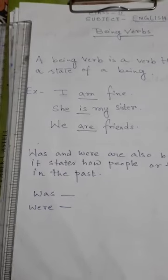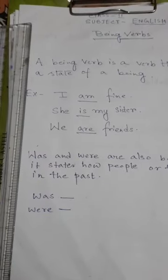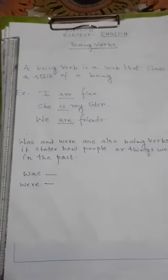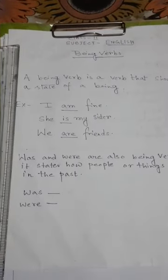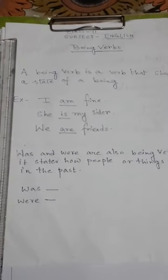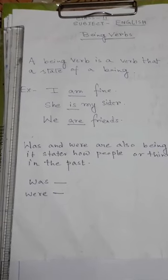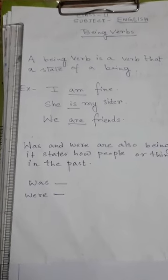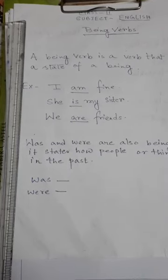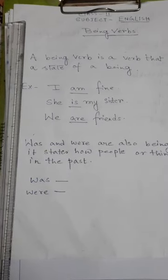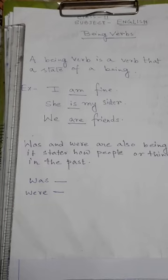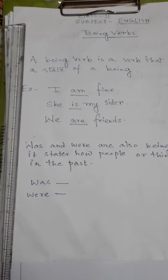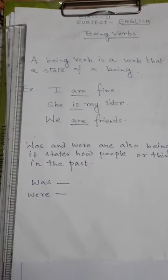Was and were are also being verbs. They state how people or things were in the past. So just as am, is, and are tell us about people and things in the present situation, likewise was and were tell us about people and things in the past.